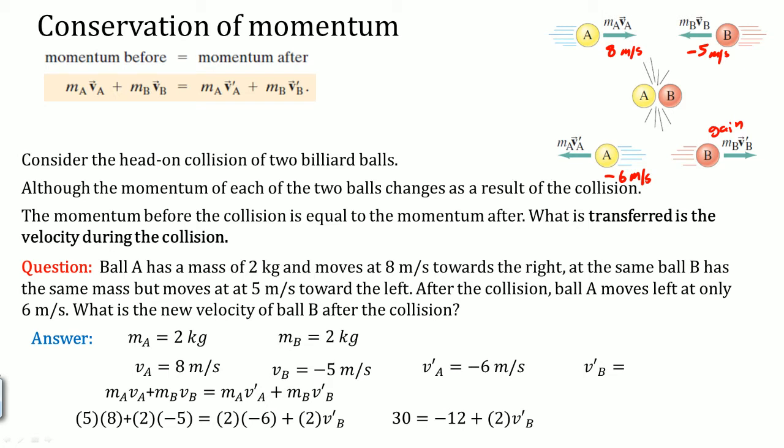V-prime just means the new velocity. So you get 21 as the result — but wait, hold on. That's actually plus 12, giving 42, divided by 2 equals 21. Actually, no — 21 is too large. I made an error.